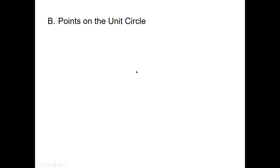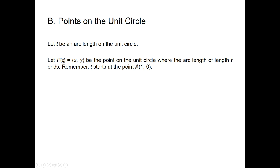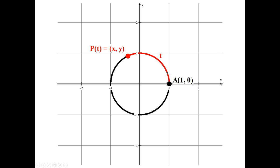Points on the unit circle: let t be an arc length on the unit circle — positive means counterclockwise, negative means clockwise. Let P(t) = (x, y) be the point on the unit circle where the arc length t ends, starting from point A at (1, 0). We would like to know what x and y are — it's a tough problem in general, but we have some special cases.